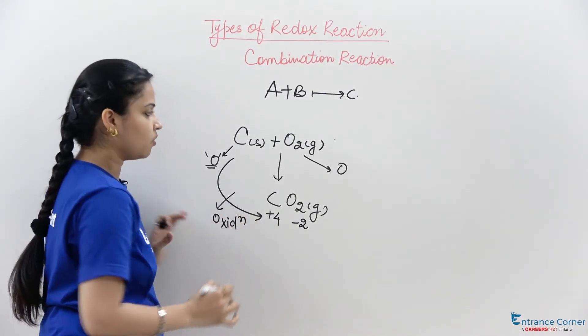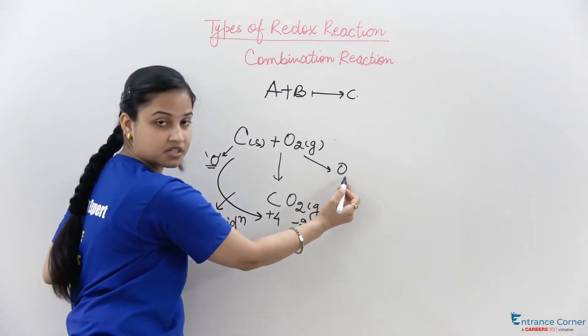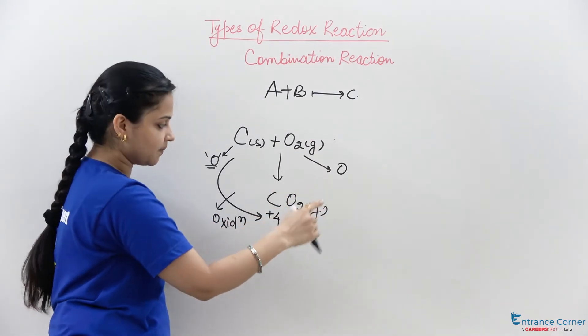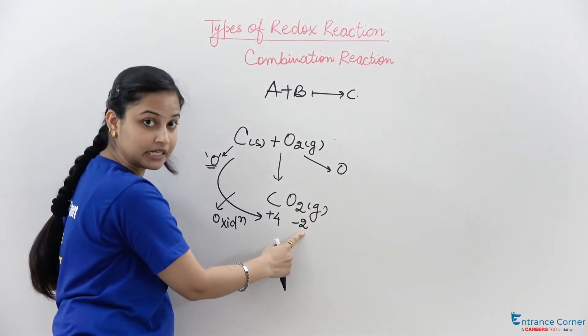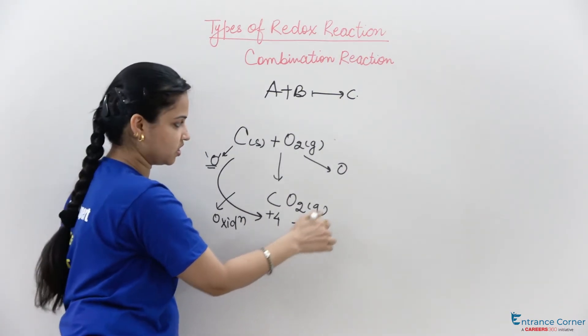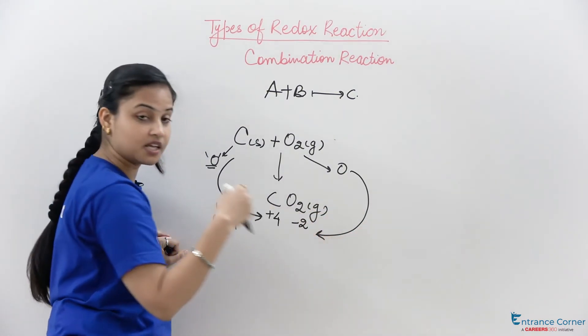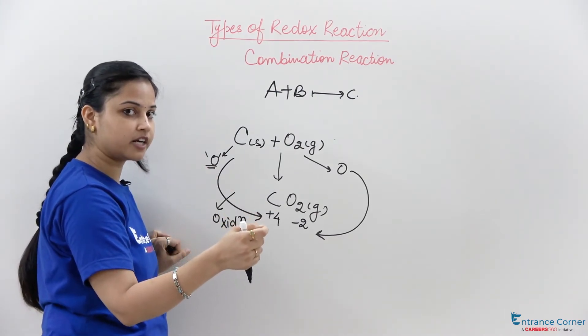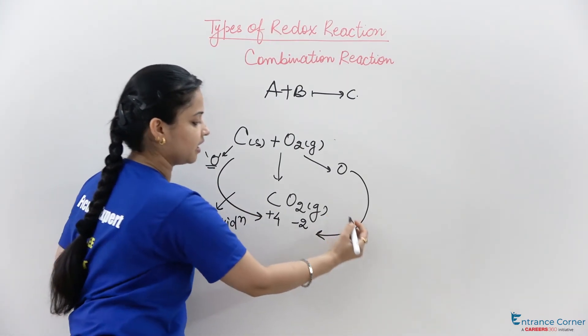Now talking about oxygen, oxygen is present in zero oxidation state but in the product it is present in minus two oxidation state. That means there is gain of electrons, and where there is gain of electrons, that means it processes reduction.